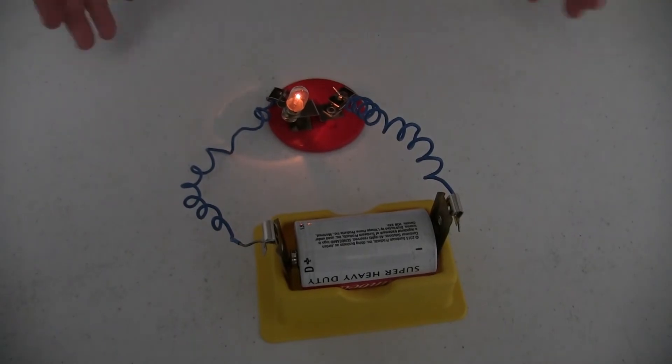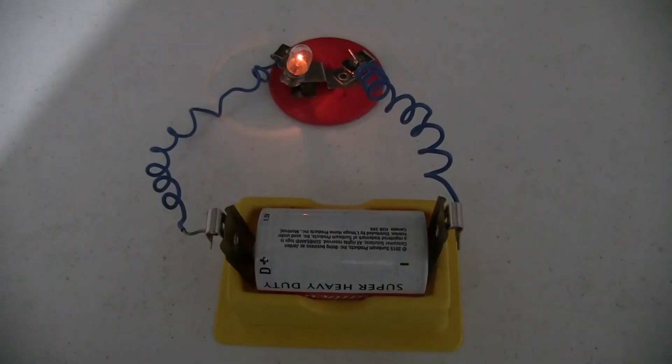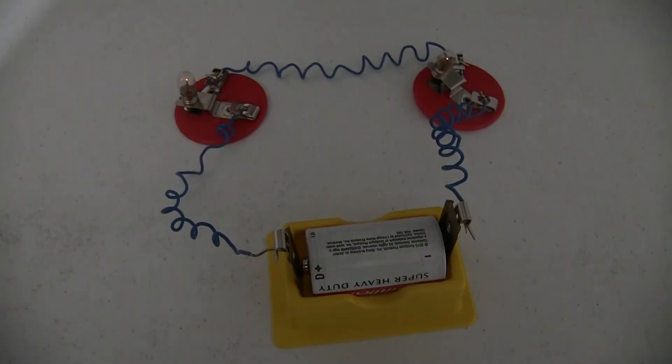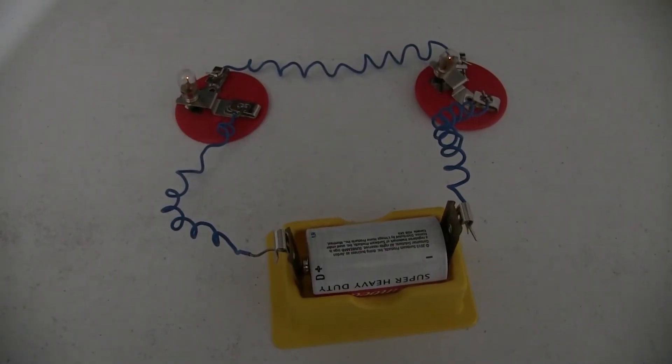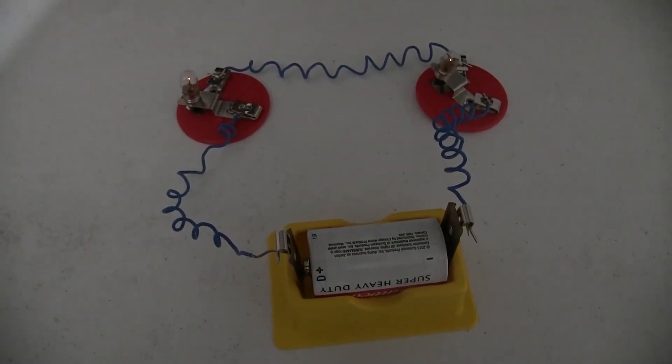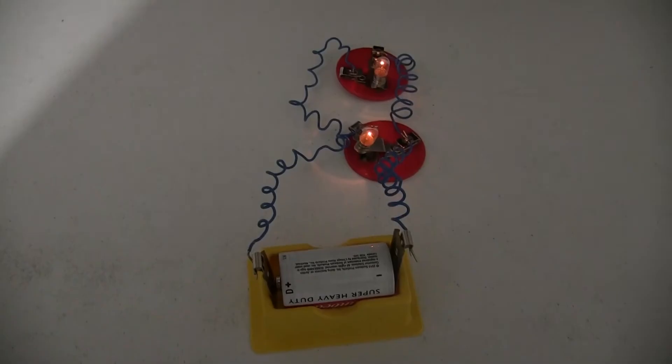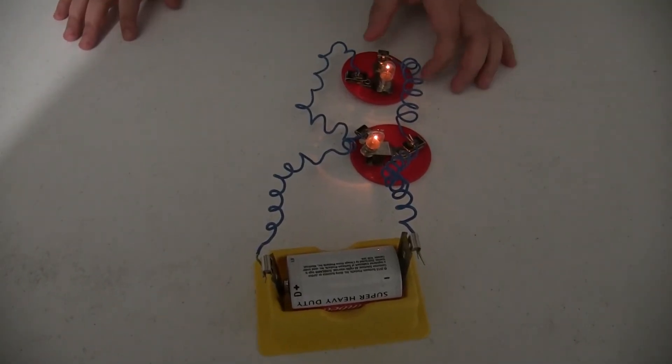So, obviously you can make a circuit with a kit. This is how bright the light bulb is with a simple circuit. This is how dim the light bulbs are in a series. Why do you think that is? Now look at how bright they are in a parallel circuit.